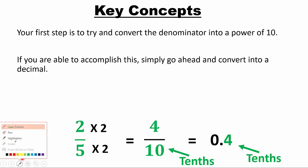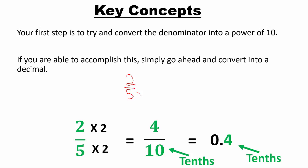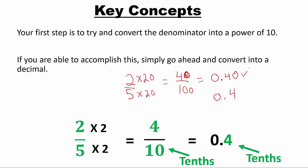Some of you might be thinking: could I have turned the denominator into 100 instead of 10? Yes, you could have — multiplying by 20 gives 40 over 100, which is 0.40. And 0.40 and 0.4 are the same value — you can drop the trailing zero without changing the value. Both approaches are correct.